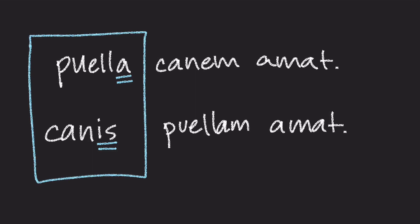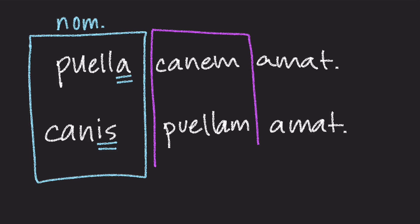This is also why Puella changed form. In the first sentence, Puella Kanem Amat, she was the subject, as she was the one loving. And in the second sentence, Kanes Puella Amat, opposite order, she is the one being loved. So now we can see why we need to know cases — it tells us who the subject is and who the object is, and who is doing the action in the sentence.